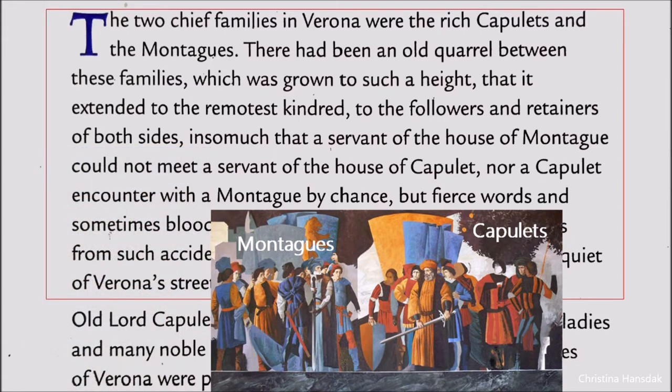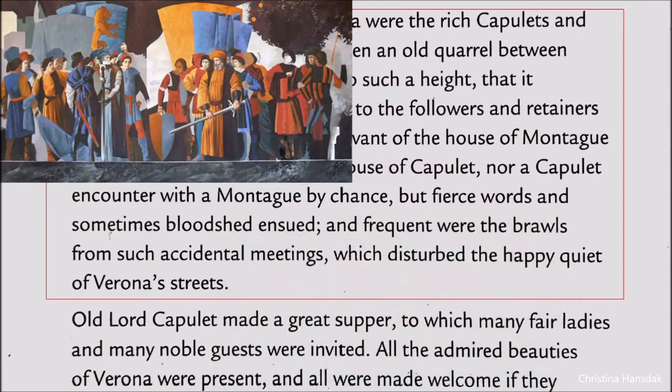The servants of the Capulets could not meet the servants of the Montagues. Similarly, nor could a Capulet encounter a Montague without incident. If by chance they met, it was sure that some great conflict would take place on the spot. Whenever these two families met accidentally, they disturbed the happy and quiet streets of Verona, and the people were attracted by their fights and usual acts.